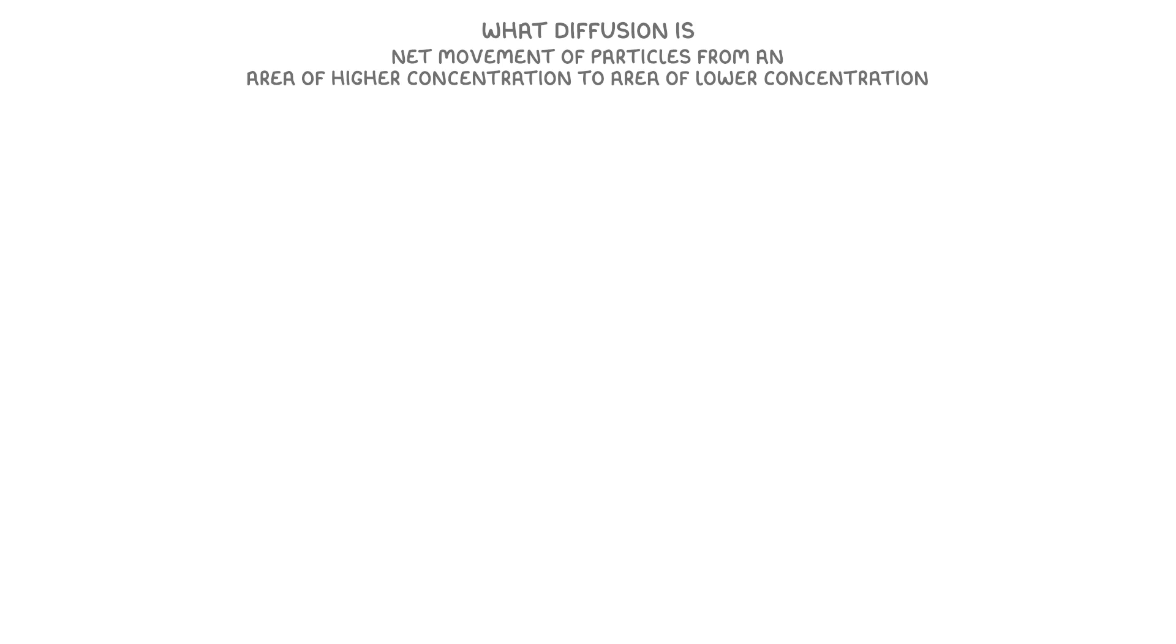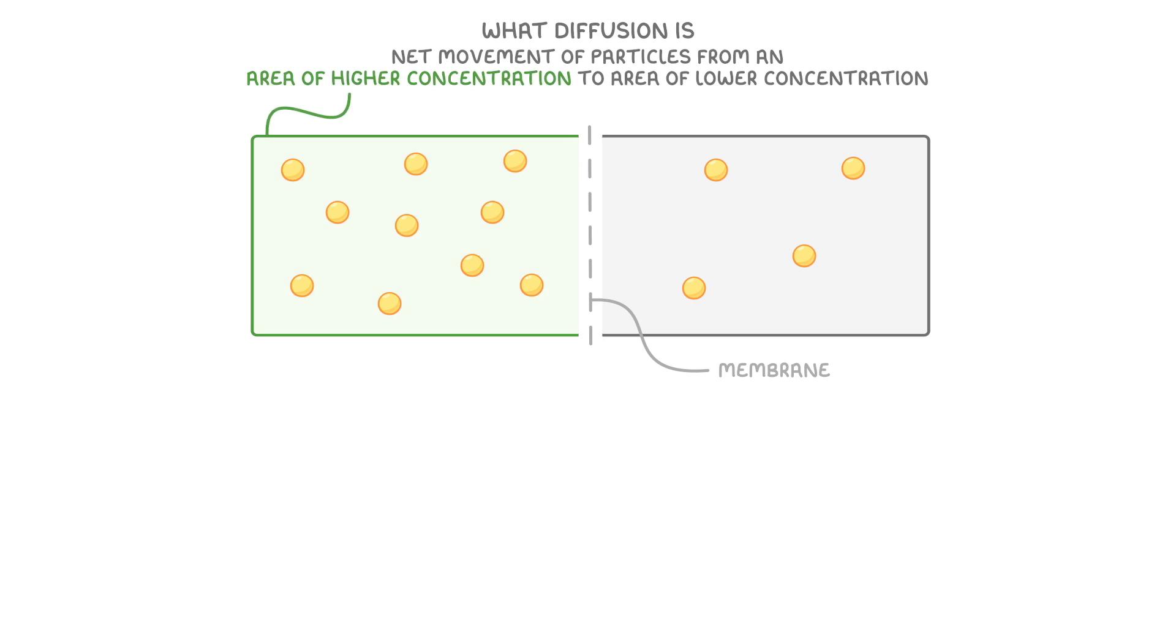Let's break this definition down a bit to understand it better. If we have two areas separated by a membrane, with lots of particles on the left, but fewer particles on the right, then the left would be an area of higher concentration, and the right would be an area of lower concentration. Then even though individual particles move randomly in all directions, the overall movement, on average, is from high to low concentration, and we refer to this as the net movement.